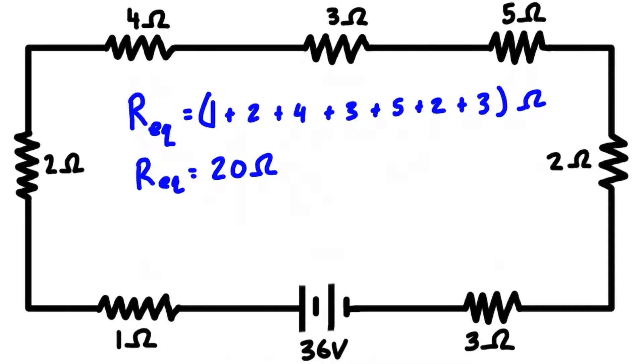We have the equivalent resistance equal to 20 ohms. Basically, we could just replace all of these resistors with a single resistor that's 20 ohms and connect it to the positive and negative terminal of the battery. From the battery's perspective it would be the same.